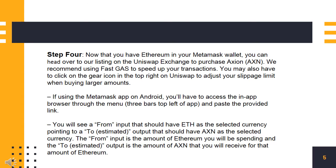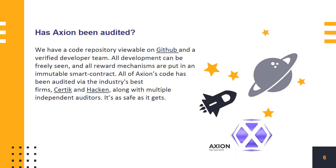You will see a 'From' input that should have ETH as the selected currency, pointing to a 'To' output that should have AXN as the selected currency. The 'From' input is the amount of Ethereum you will be spending, and the 'To' output is the amount of AXN that you will receive for that amount of Ethereum.